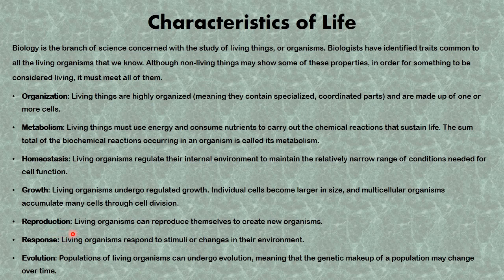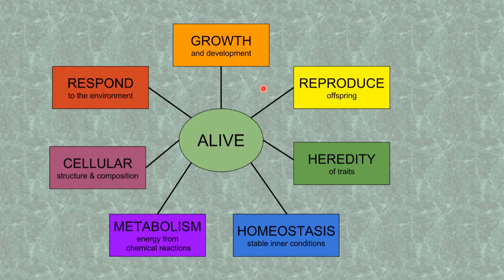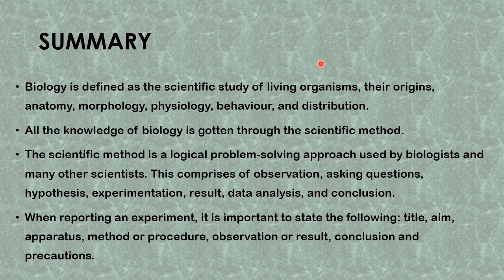Another characteristic is reproduction — the ability of living organisms to produce offspring of the same kind. Next is response — the living organism's ability to respond to stimuli or changes in the environment. Finally, evolution — populations of living organisms can undergo evolution; in other words, the genetic makeup can change over a period of time. This pictorial representation shows all the things you observe in a living organism to determine whether it is alive.